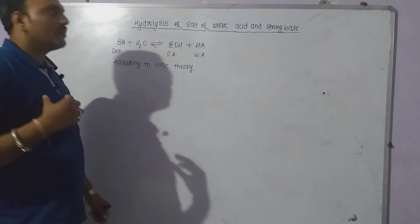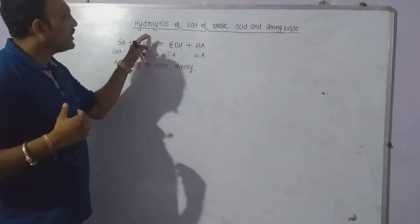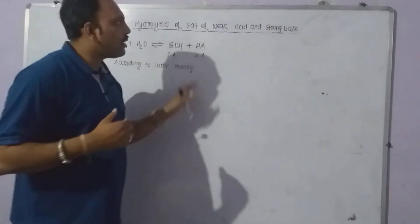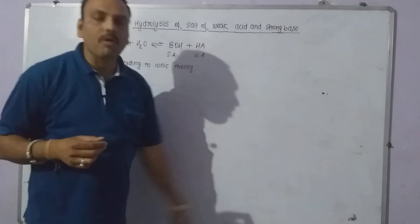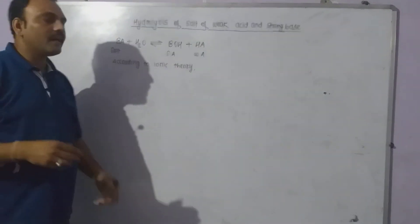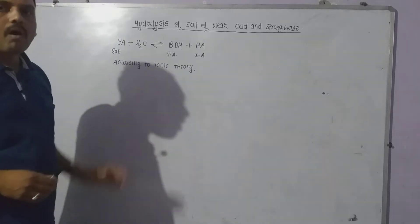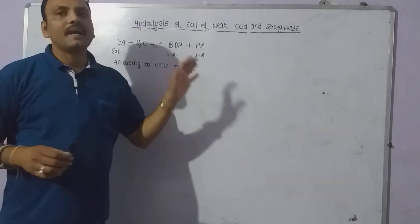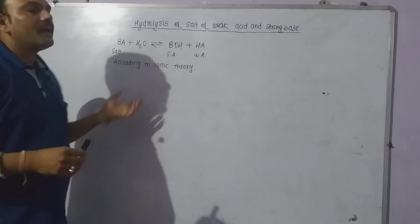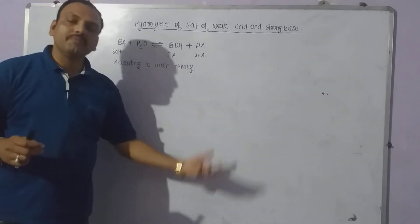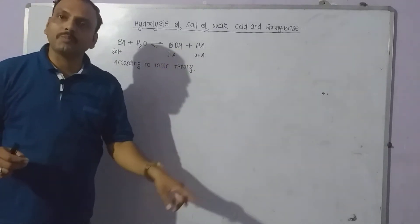Hello everybody, today we are going to discuss hydrolysis of salt of weak acid and strong base. Consider salt BA of weak acid and strong base. HA is the weak acid and BOH is the strong base from which this salt BA is obtained.